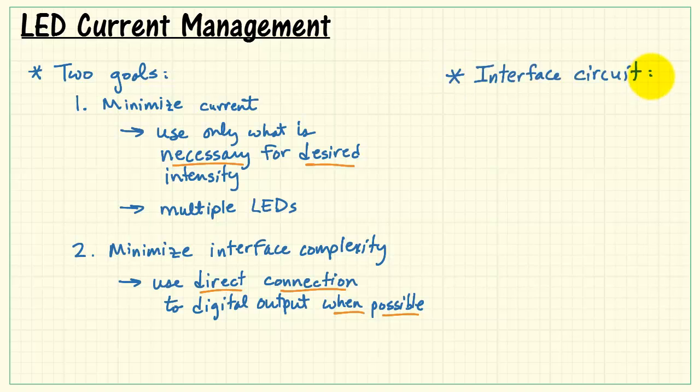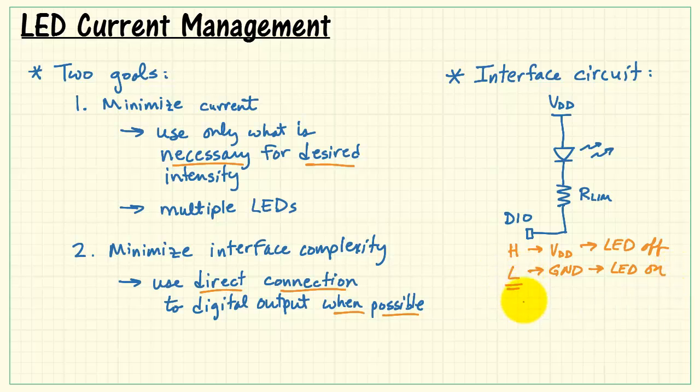Let's consider the interface circuit. It begins with our supply voltage VDD. Here's the LED itself. Typically, we will need a current limiting resistance. That would then be connected to our digital input-output. Now, when the DIO is in the high state, it looks like VDD. We have essentially zero volts across the LED, and that means we have the LED in the off state. When we drop the digital output to the low state, that means it looks like ground, and the LED becomes on. We can look at the LED current as flowing from the supply through the LED and the current limiting resistor down to ground. We call this the current sinking interface.